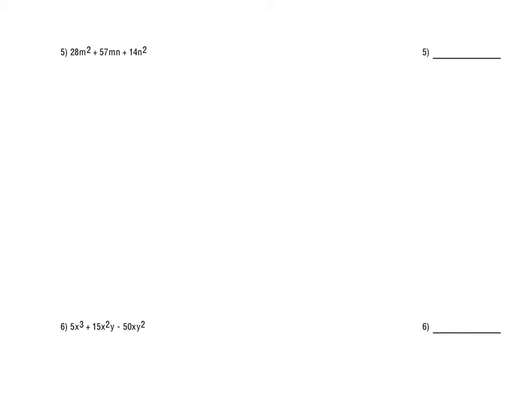For number 5, we've got 28m squared plus 57mn plus 14n squared — we've got m squareds, n squareds, and an mn in the middle. We'd want to consider a common factor to take out, but 57 doesn't have any common factors with the 14 or the 28. Since 28 and 14 may be a bit of a pain to deal with, I would highly recommend writing out your list of factors for the 28 and the 14. For the 14, we have 1 and 14, and 2 and 7. Many of these you can eliminate because they'd have a common factor or be way too far off to get 57mn.